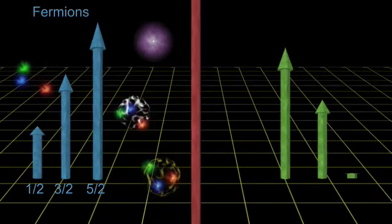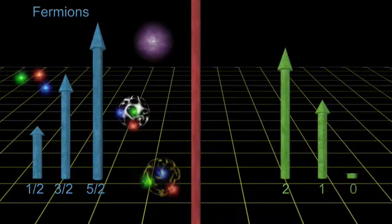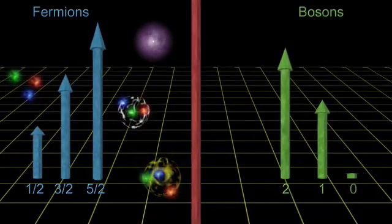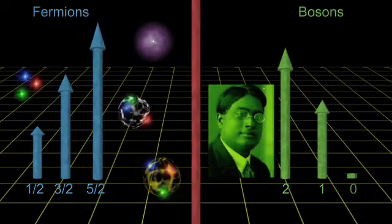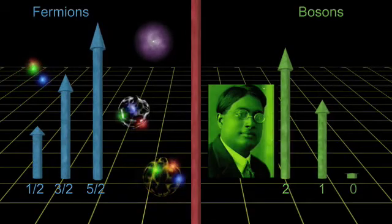The other family of particles have spin equal to zero, one, two, three, and so on. They are called bosons, after Satyendra Bose, who along with Einstein developed the statistics for dealing with this family.